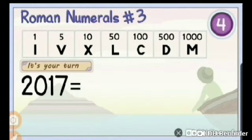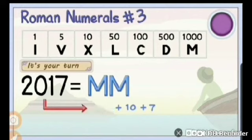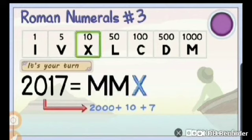Now, 2017 if I want to write, I will write 2000 plus 10 plus 7. And 2000 is 1000, 1000, MM. 10 is X, and 7 is VII.